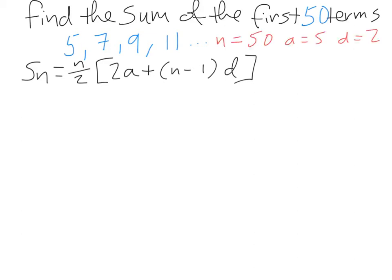Now another way that they can phrase this, instead of asking you to find the first 50 terms, or the sum of the first 50 terms, is they might ask you to find S50. So instead of saying Sn, they'll say find S50, and it just means the exact same thing. So we have our formula and we have our values. N is 50, a is 5, and d is 2.